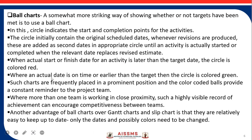If an activity is going to finish after the target date, we color that circle in red. Where an actual date is on time or earlier than the target date, the circle is colored green. Such charts are frequently placed in a prominent position, and the color-coded balls provide a constant reminder to each team member, so that everyone can see whether they are meeting the timeline. Where more than one team is working in close proximity, such a highly visible record of achievement can encourage competitiveness between teams. Another advantage of ball charts over Gantt charts and slip charts is that they are relatively easy to keep up to date — only the dates and possibly the colors need to be changed based on whether they are meeting the timeline.